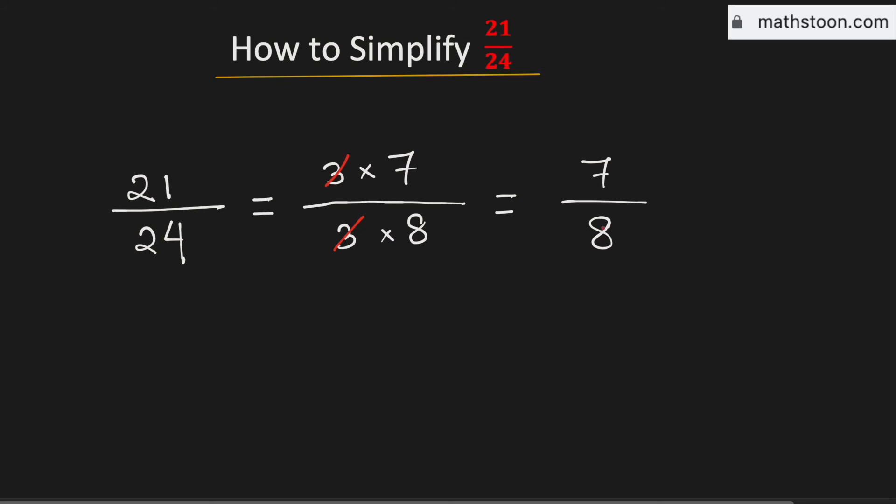As 7 and 8 are co-prime to each other, means there is no number which can divide both 7 and 8 other than 1. We say that 7 by 8 is the simplified reduced form of the fraction 21 divided by 24.